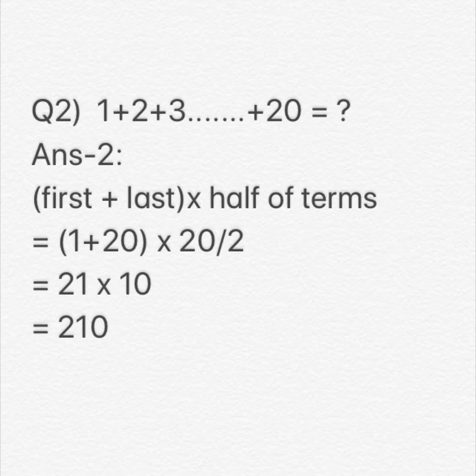to be multiplied by half of the total terms present in the series. Well, let's do that. First term is 1 plus last term in the series is 20, so 1 plus 20 in brackets. This sum is to be multiplied by half of the terms. Total number of terms is 20 because we start with 1 and end at 20. 1 to 20 is 20 terms, so half of that number of terms